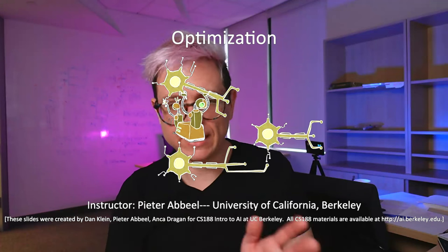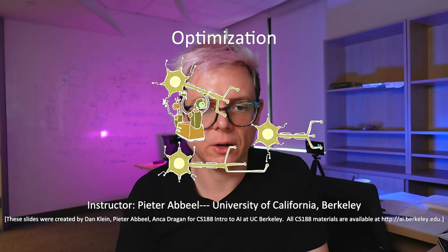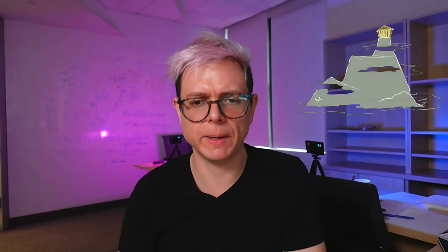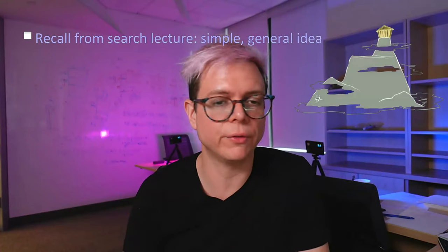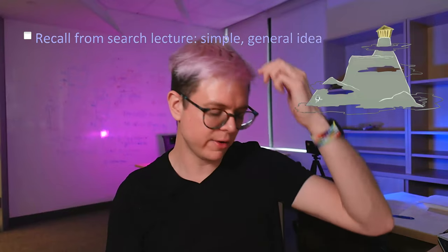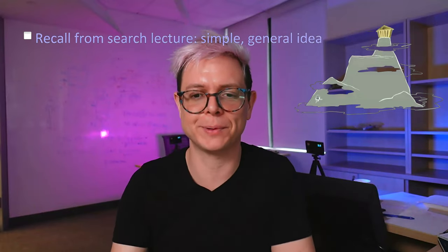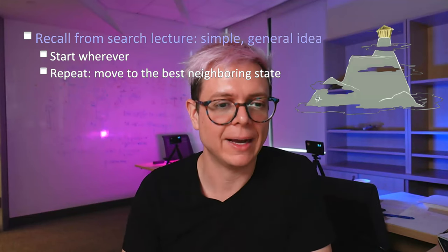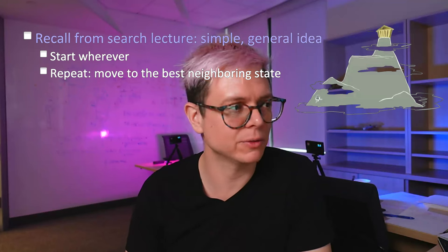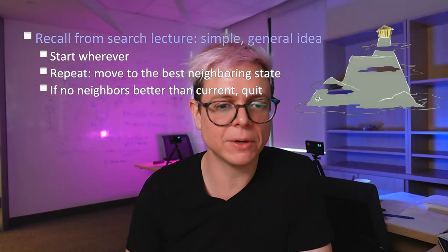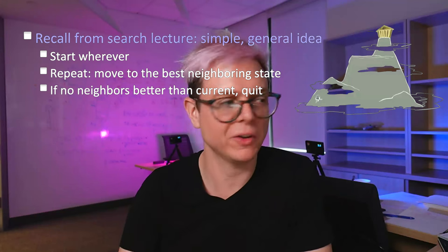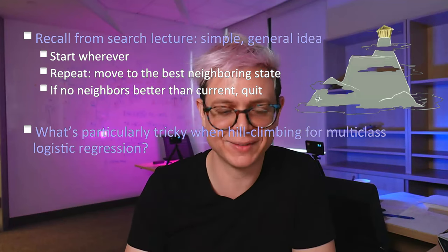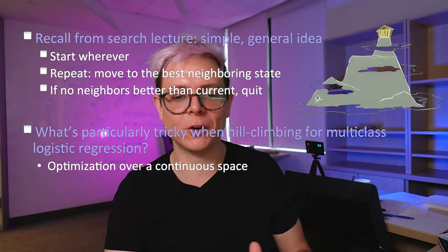Slides are borrowed from Berkeley with heavily updated notation. Optimization, Artificial Intelligence. Let's figure out how this works. Hill climbing — remember when we were talking about heuristic search or informed search? We could evaluate a function to figure out in what direction to proceed. So we start wherever you want, repeat: move to the best neighboring state. If there are no neighbors better than current, quit. What's particularly tricky when we do hill climbing for multi-class logistic regression? First of all, optimization over a continuous space.